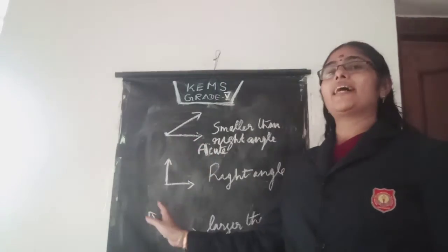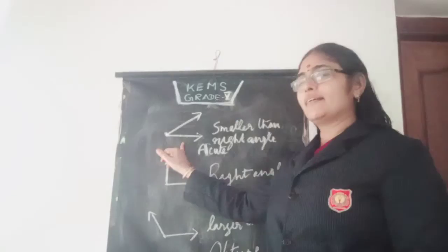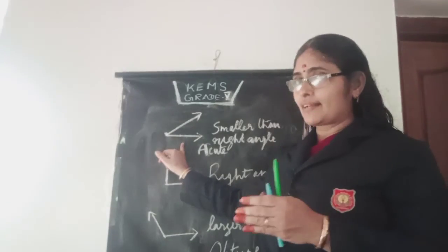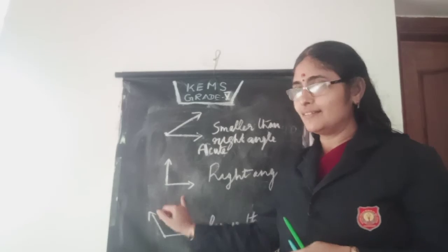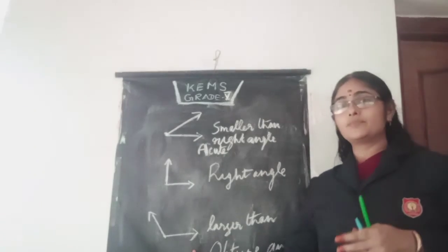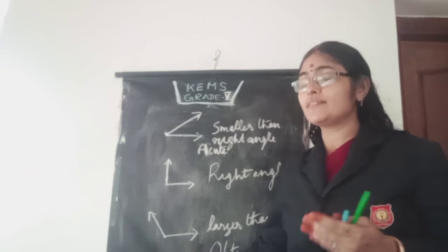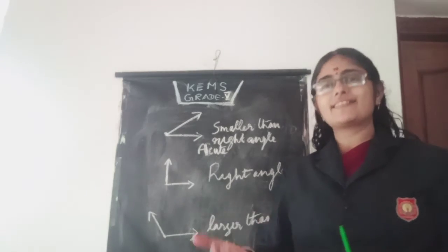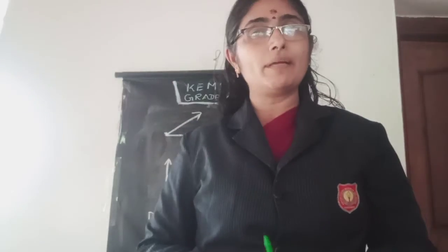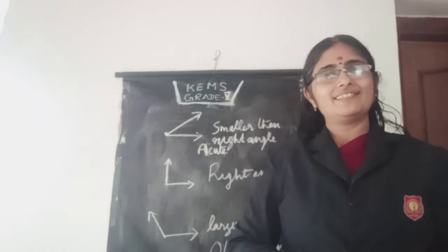What are the three types of angles? One is acute angle — the smaller angle. This is the right angle. This is the obtuse angle — the larger angle. In the next class we can discuss more about the shapes. Thank you all, have a nice day.